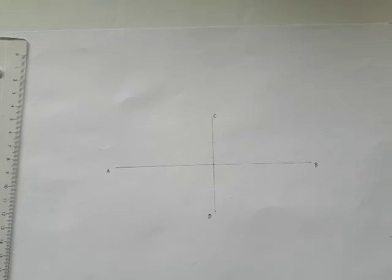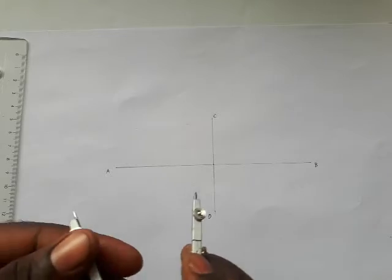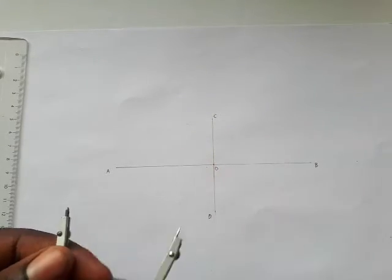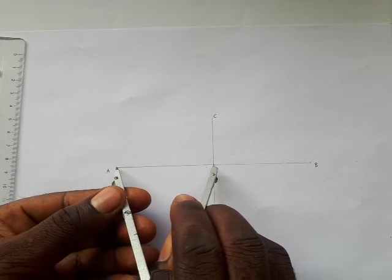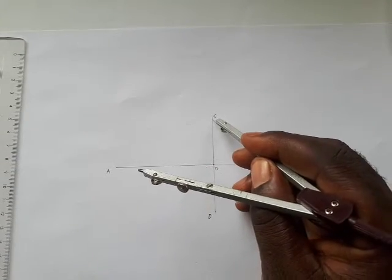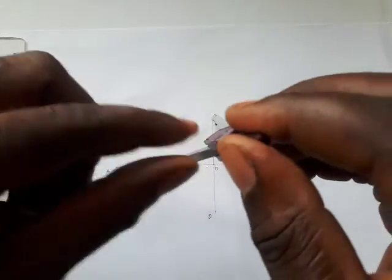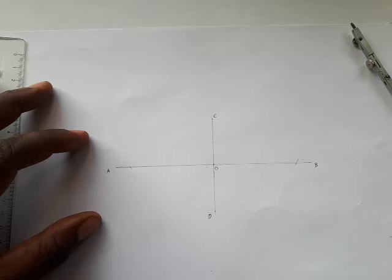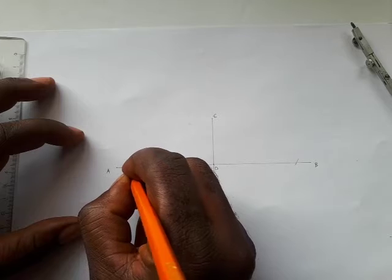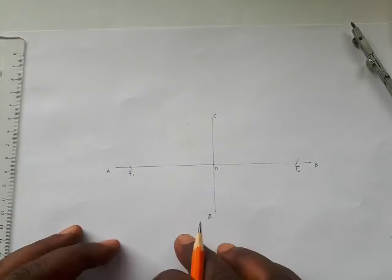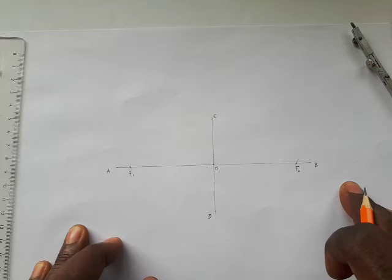What you do next is you locate the focus of the ellipse. How do you do that? Now measure half of the major axis. Let's call this point here 0. So you needle on 0, stretch to A. So this is half the length of the major axis. So with this radius, do not alter it. You needle on C and cut line AB at this point. Then with same radius, you cut line AB at this point. So these are the foci, call this F1 and call this F2. Both of these points are the foci of the ellipse.